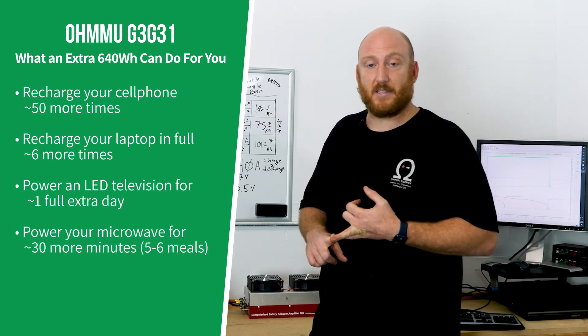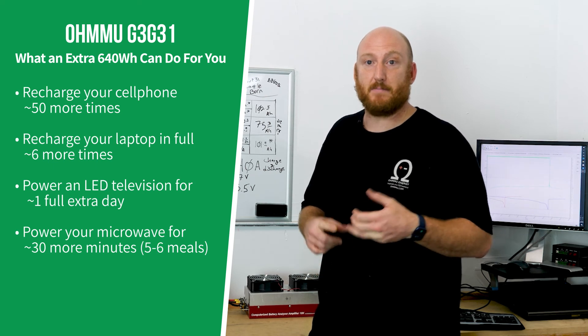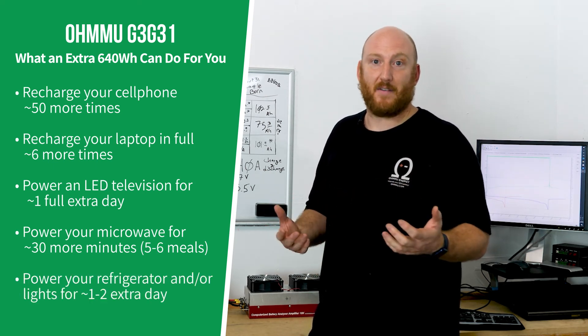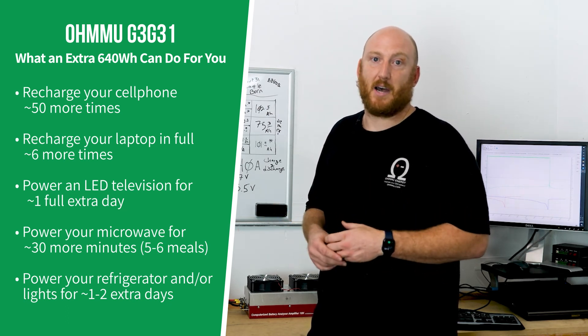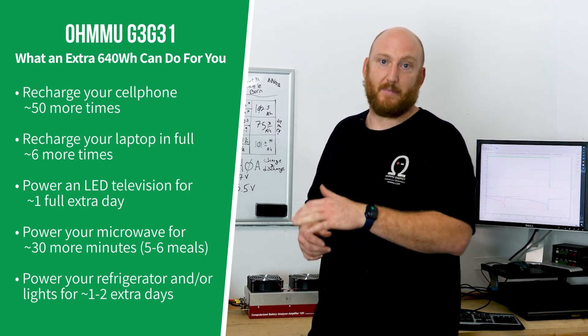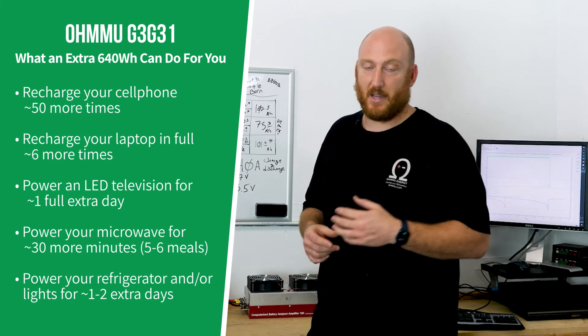Things like a microwave, that's important to consider. This is like 30 minutes more run time on your microwave. So that could be like five, six frozen meals additionally on top of the base of what you would get with the Battleborn. By switching to Omu, you get all that extra capacity.